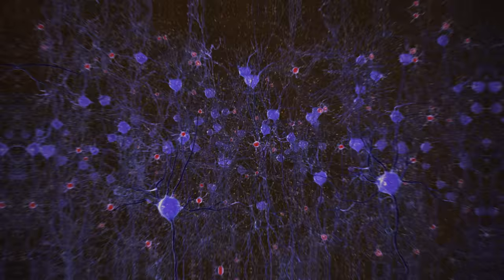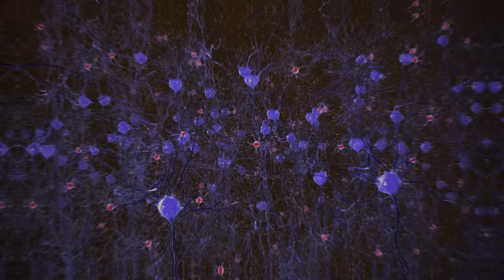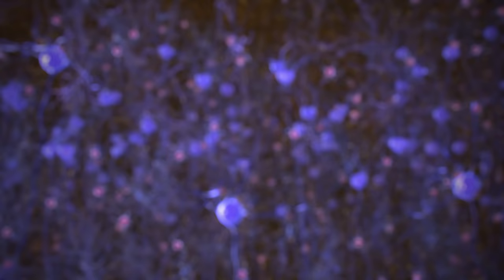Altered gamma rhythms in Alzheimer's disease are due in part to the toxic accumulation of a snipped protein called amyloid beta, resulting in fewer neurons firing in synchrony.